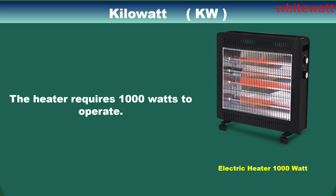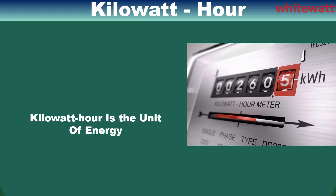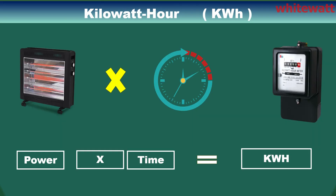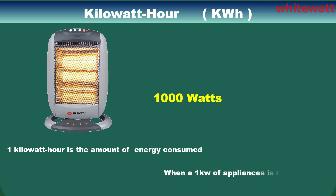it means that the appliance requires one thousand watts of power to operate. Kilowatt hour is the unit of energy. It represents the amount of energy used over time. One kilowatt hour is the amount of energy consumed when a one kilowatt appliance